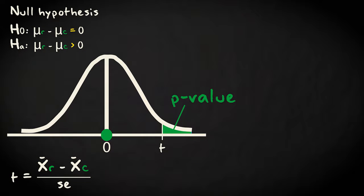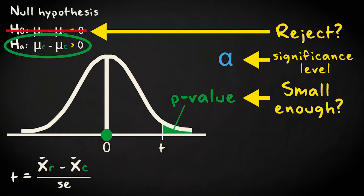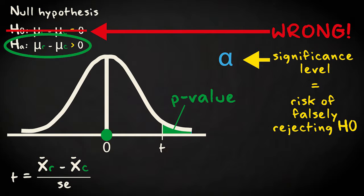How do we decide whether the p-value is small enough to reject the null hypothesis in favor of the alternative hypothesis? We decide by comparing the p-value to the significance level denoted by alpha. This is a value set beforehand, which represents the risk we're willing to run of mistakenly rejecting the null hypothesis, so rejecting it when it's in fact true.